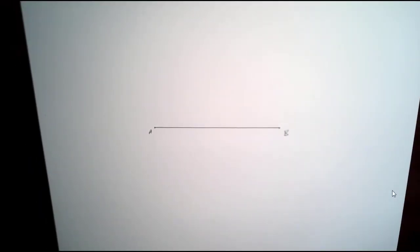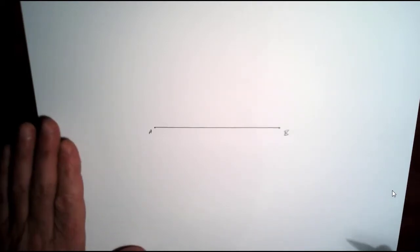Okay, so in this video I'm going to construct a perpendicular bisector of the line segment AB. So first thing I'm going to do is take my compass.